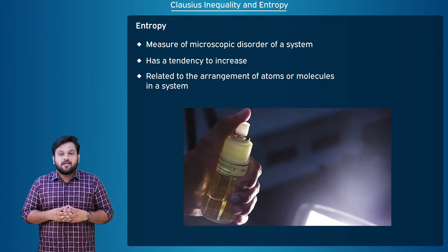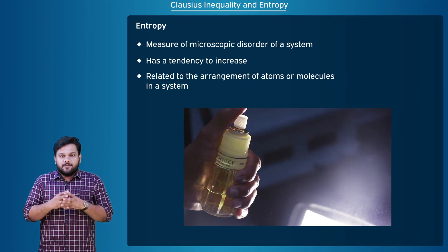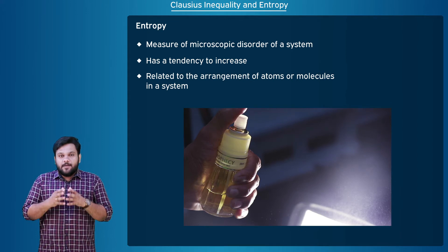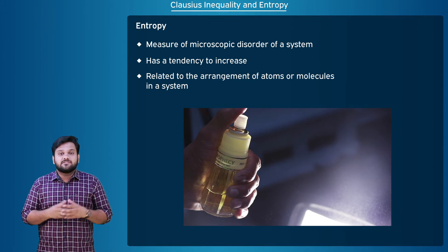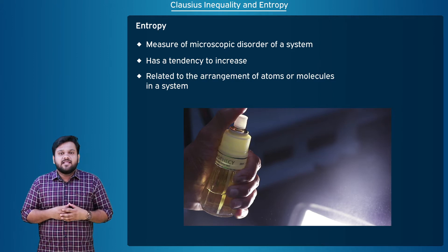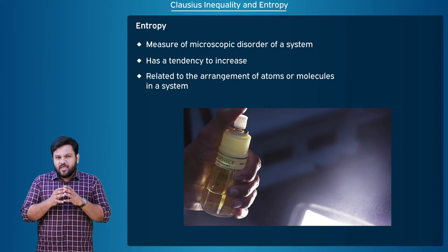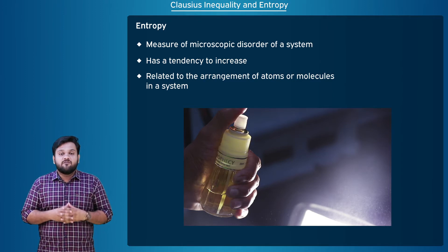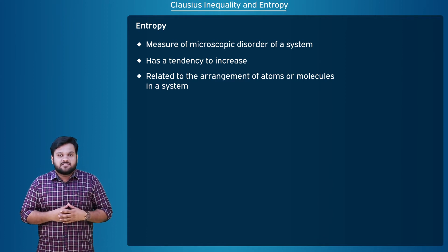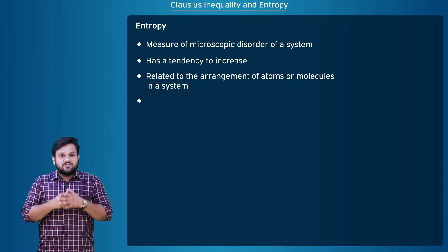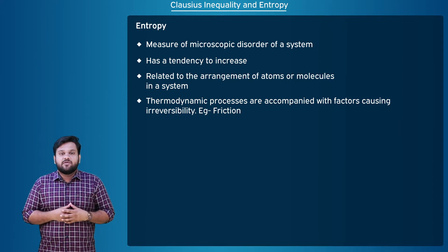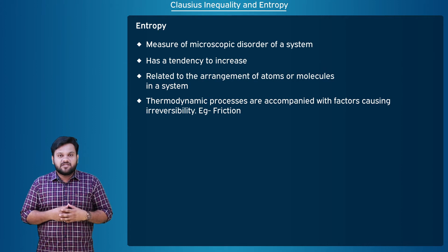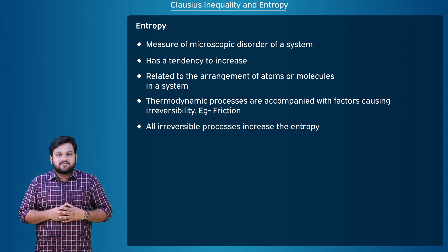Consider a situation where we spray perfume in a room. The perfume molecules will spread throughout the room. Perfume that was liquid in the bottle was an ordered arrangement, but when it sprays out it expands into particles with a disordered arrangement within the room space. So randomness increases, which means entropy increases. Any process which increases randomness will increase the entropy. All irreversible processes are like this. The processes in thermodynamics like work and heat interaction are accompanied by factors causing irreversibility, for example friction. All irreversible processes increase entropy.